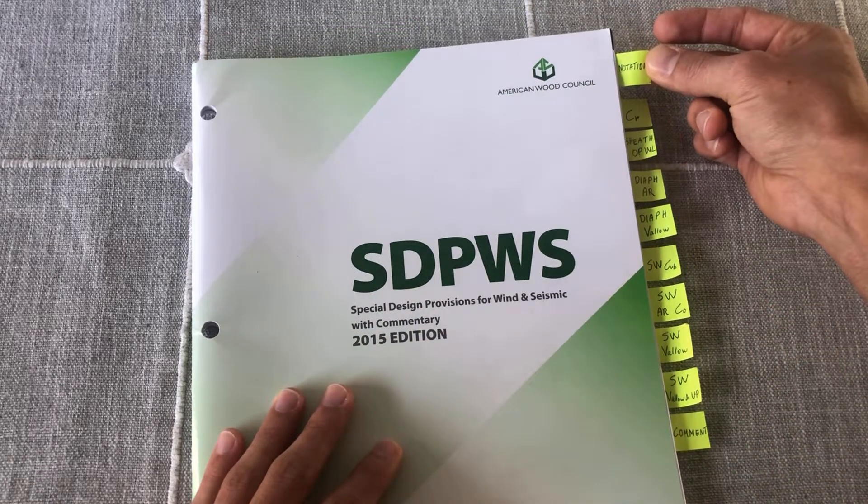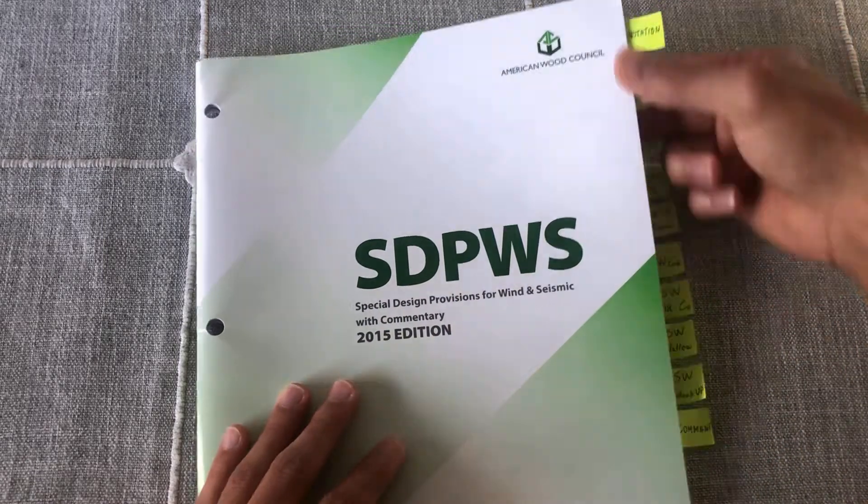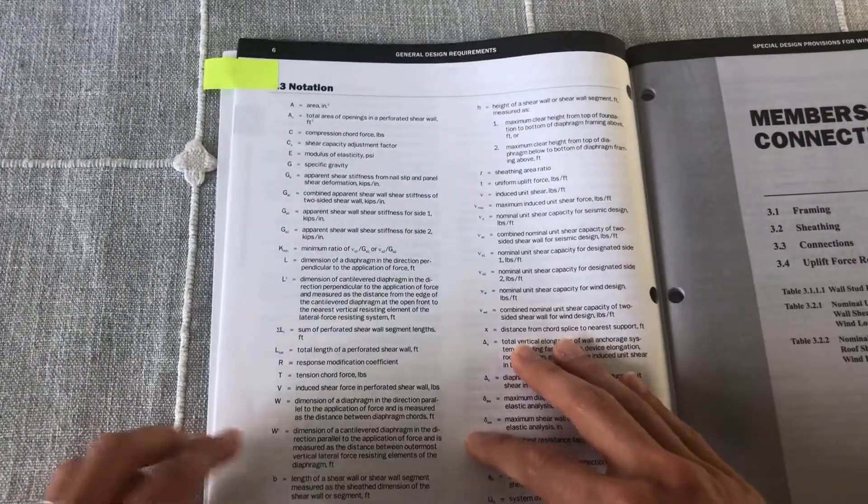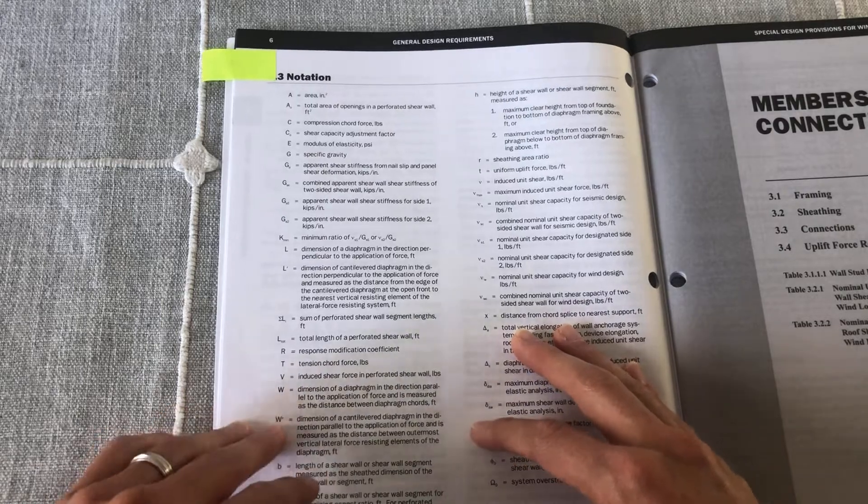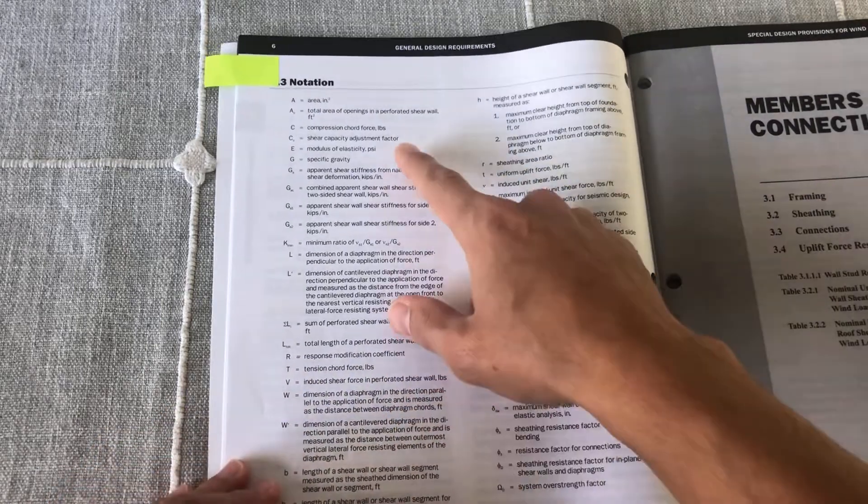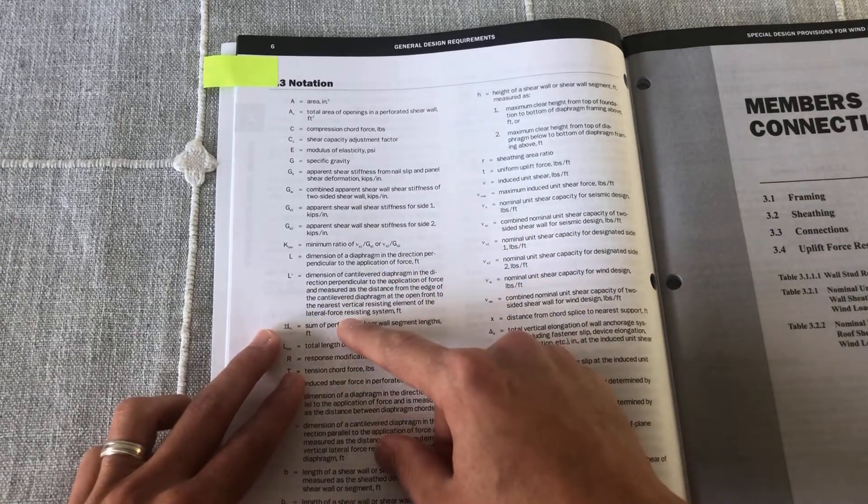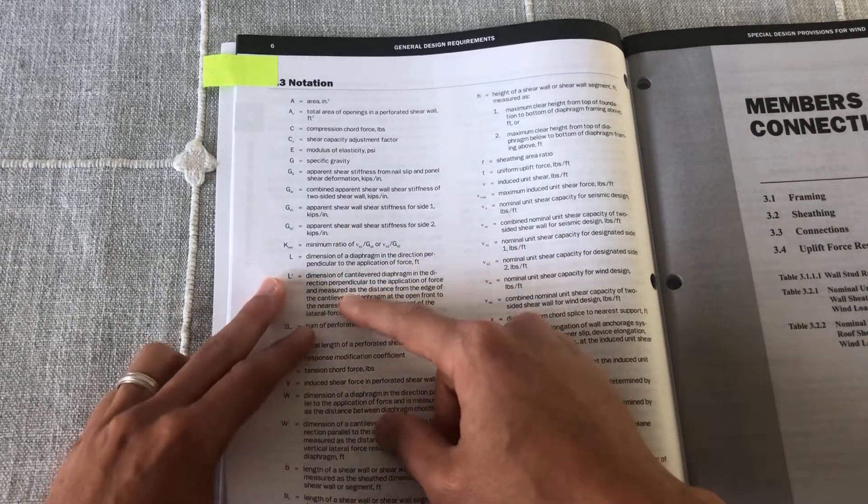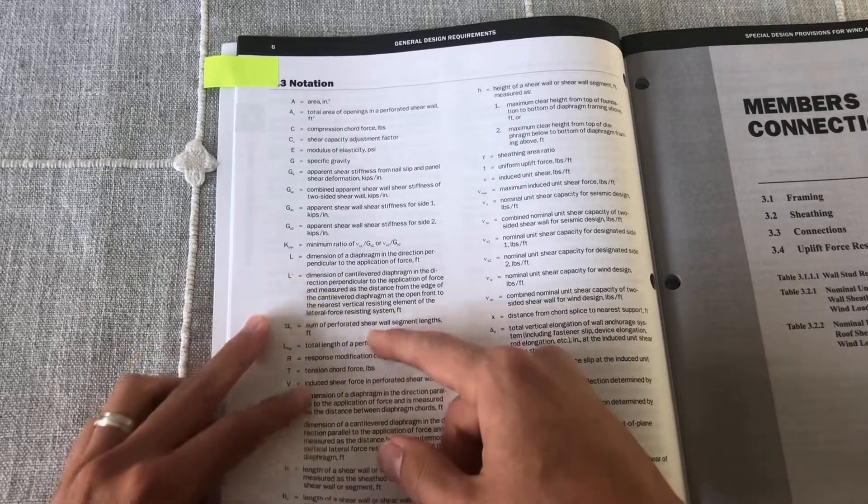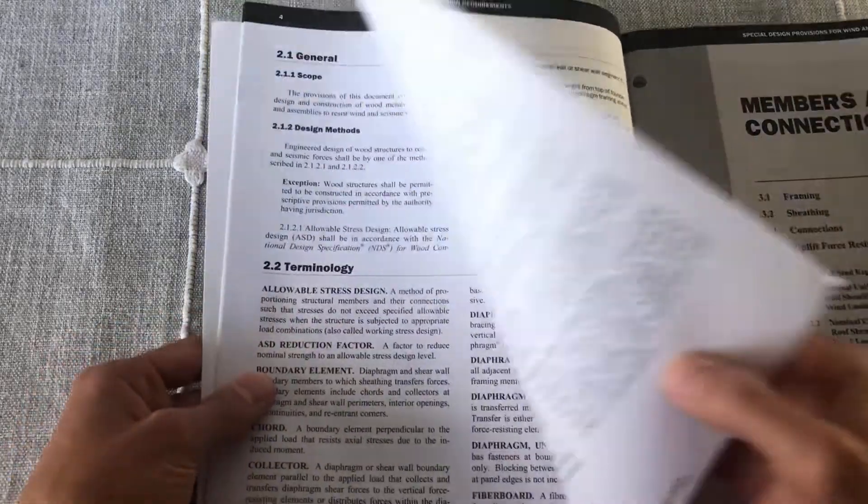The first one here is notation. You probably saw a pattern that I always like to have a notation tab in all my books and manuals and provisions. First is for me to quickly see what all the new variables are, variables that I may not know what they mean, so it's a quick way to just come back to this tab.